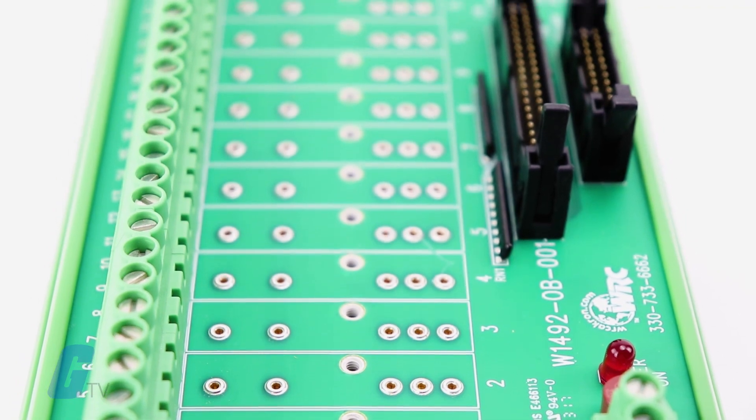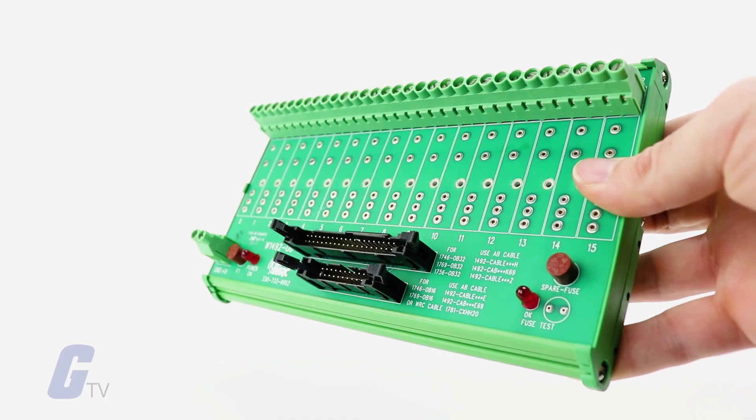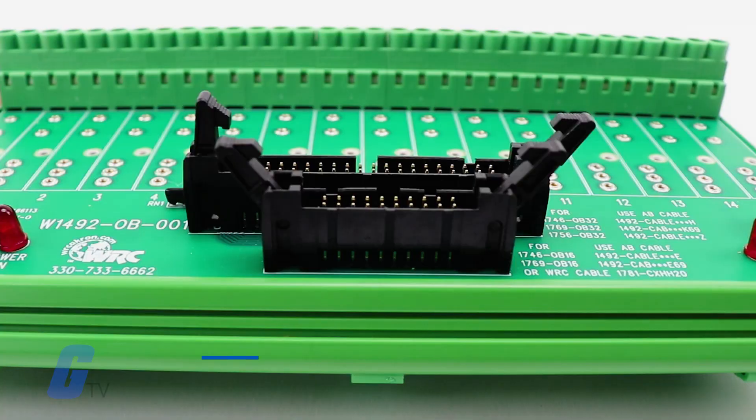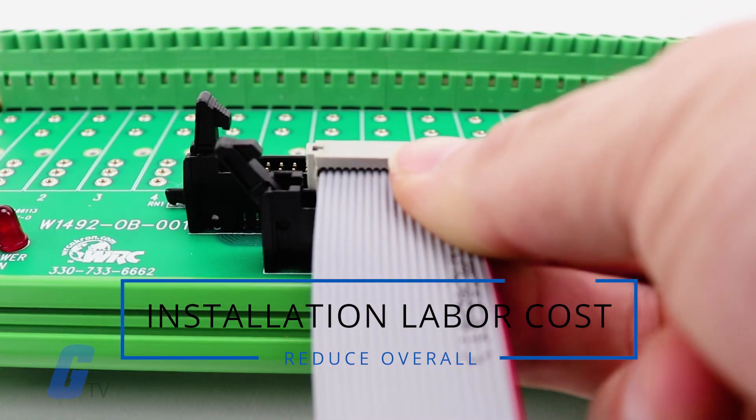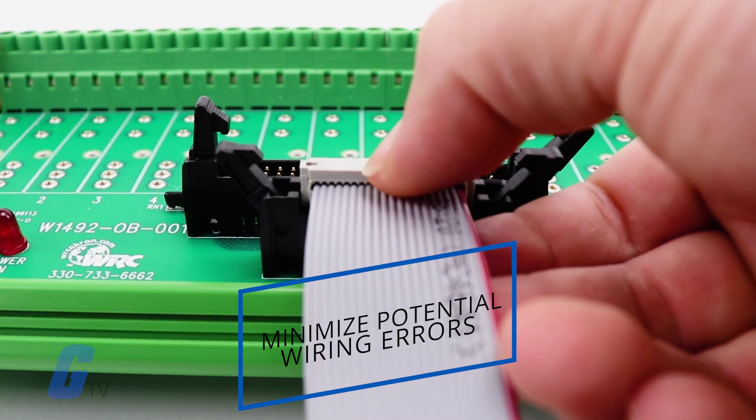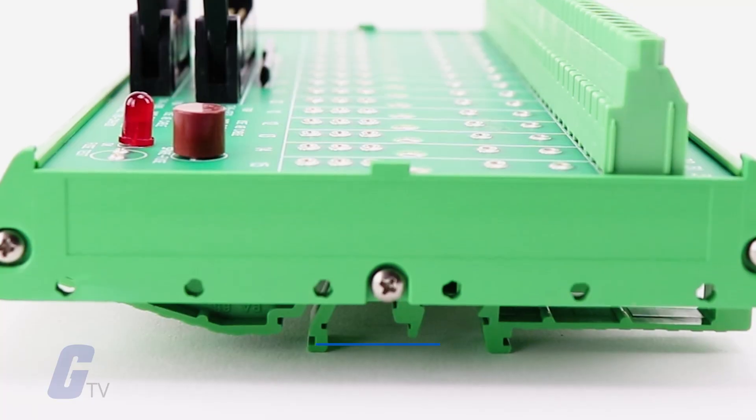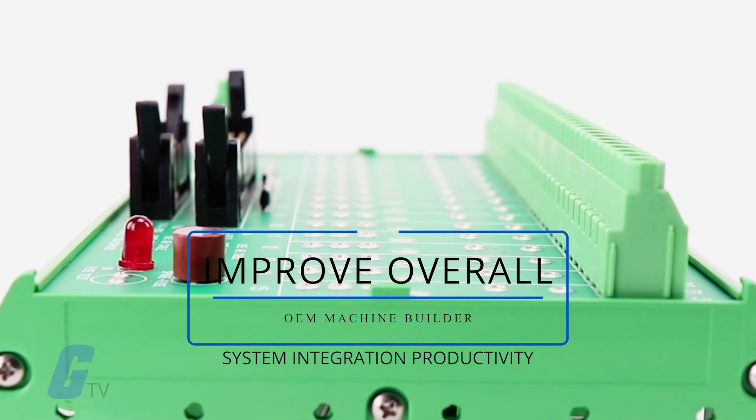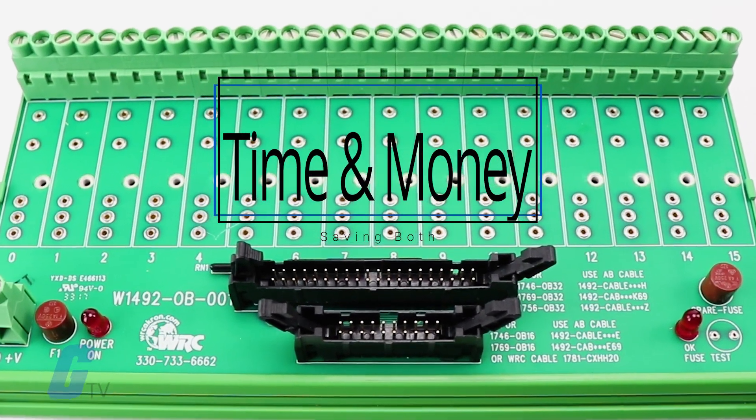Using WRC's W1492 Wiring and Signal Conditioning Solutions with Allen-Bradley PLCs will reduce overall installation labor cost, minimize potential wiring errors, and improve overall OEM machine builder and system integration productivity, saving both time and money.